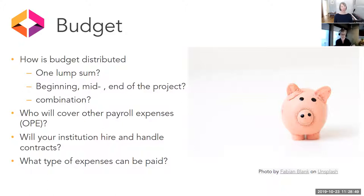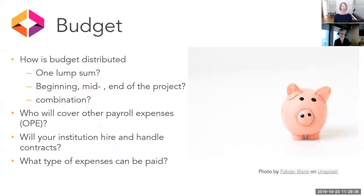Think about what types of expenses can be paid and what will not be paid for. It's really about having an understanding of how university budgets work. There's a lot to consider and it can become very complicated and overwhelming. But that's why documenting, documenting, documenting — and talking to people beforehand — will really help you in the long run. Make sure you have clear lines of communication between all stakeholders: the author, yourself as project manager, and other people you're working with.